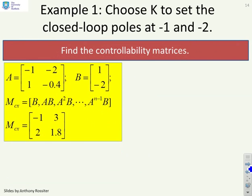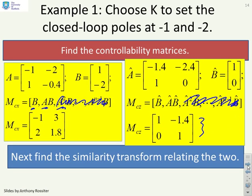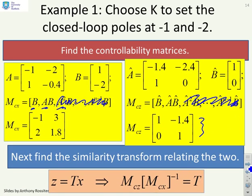Next, find the similarity transform linking the two forms. For A and B, the controllability matrix is [B, AB] since it's 2×2, giving Mc_x = [[-1, 3], [2, 1.8]]. For  and B̂, the controllability matrix is [B̂, ÂB̂], giving Mc_z. The transformation T is then given by Mc_z · Mc_x⁻¹.